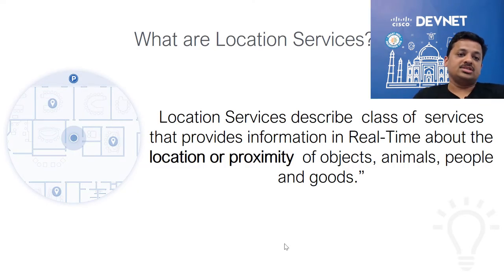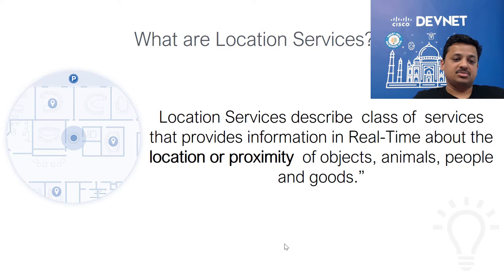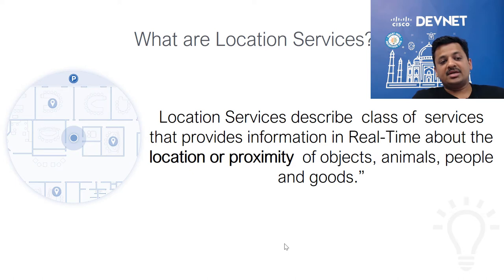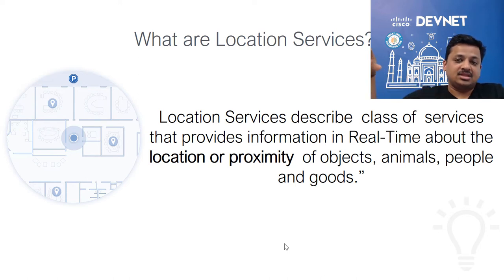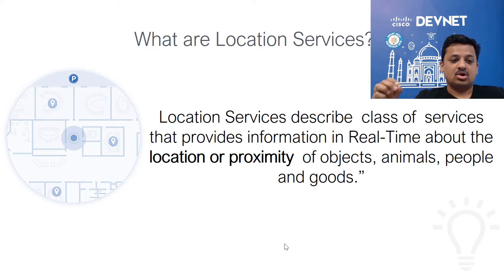So what are location services? Location services describe a class of services that provide real-time information of location and proximity. Now in terms of the difference between location and proximity: location is telling you the real-time x, y coordinate of a particular object, versus proximity is telling you that this object is somewhere in this area. For example, if I am in this room, that is proximity — it's telling me that Ashutosh is in proximity of this room. Versus if it is telling me Ashutosh is at x, y, that is the location of where that person is.